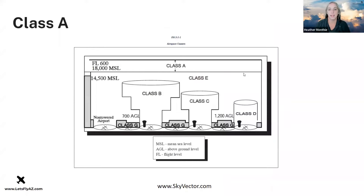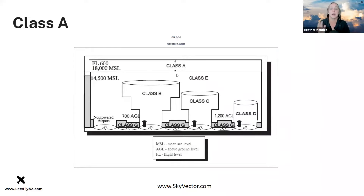Class A airspace is not shown on VFR sectional charts because it starts at 18,000 feet MSL up to flight level 600 — it's just not charted on sectionals.